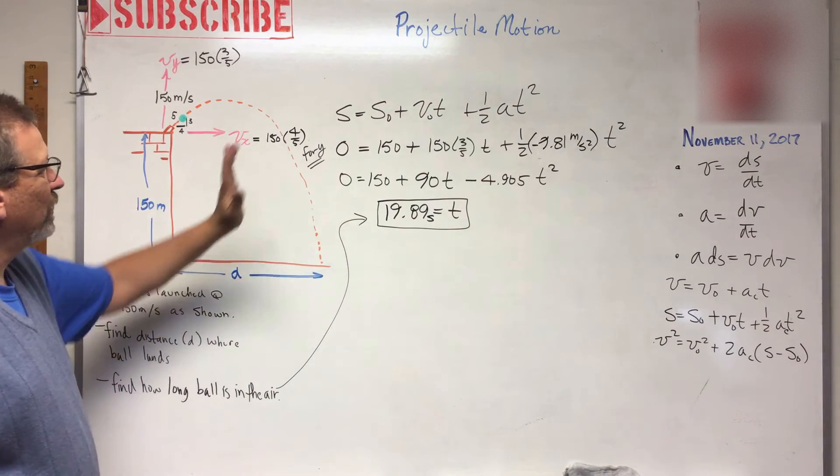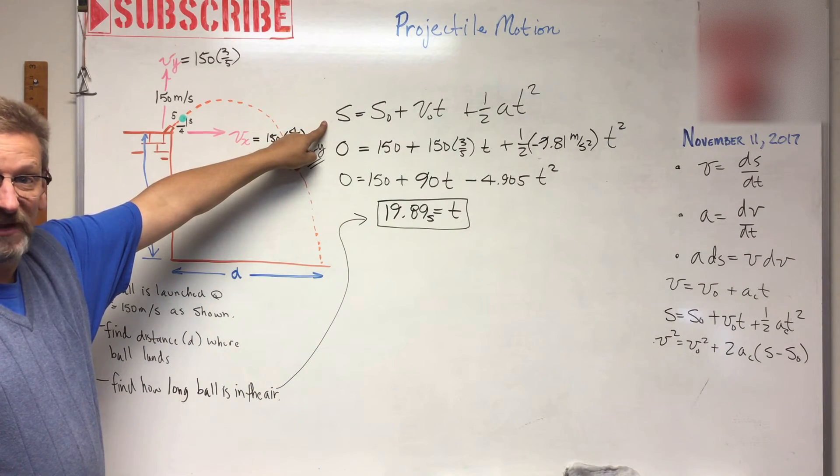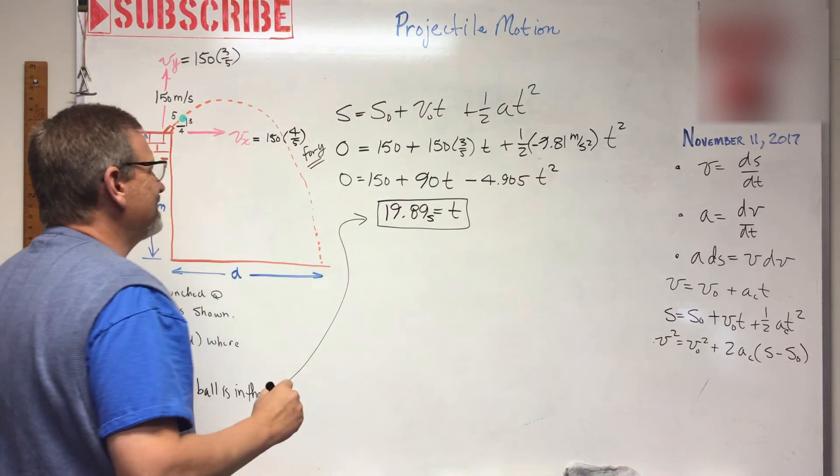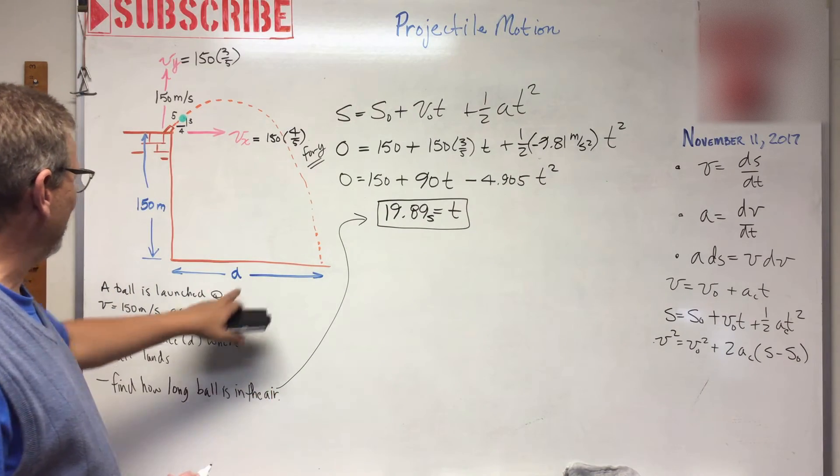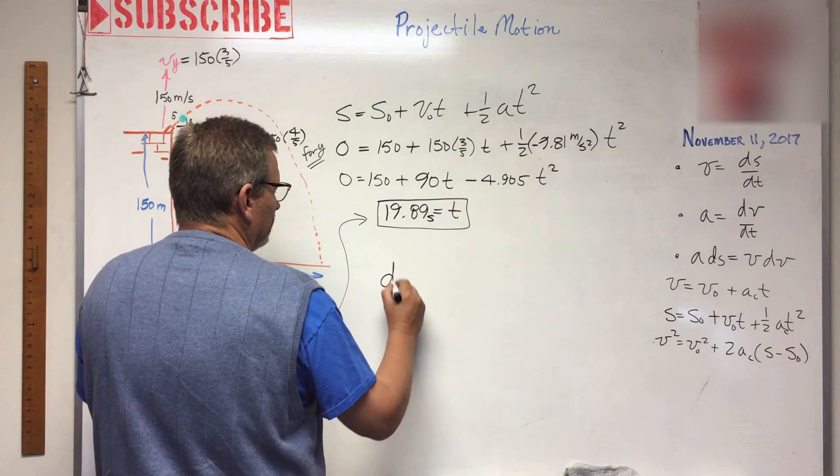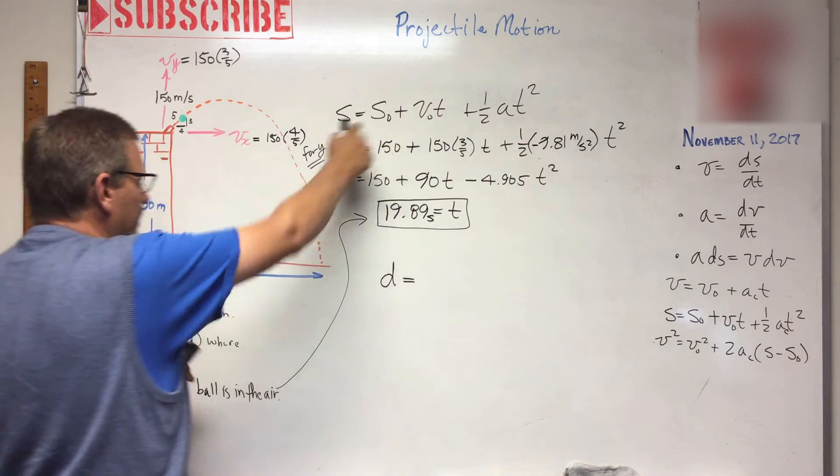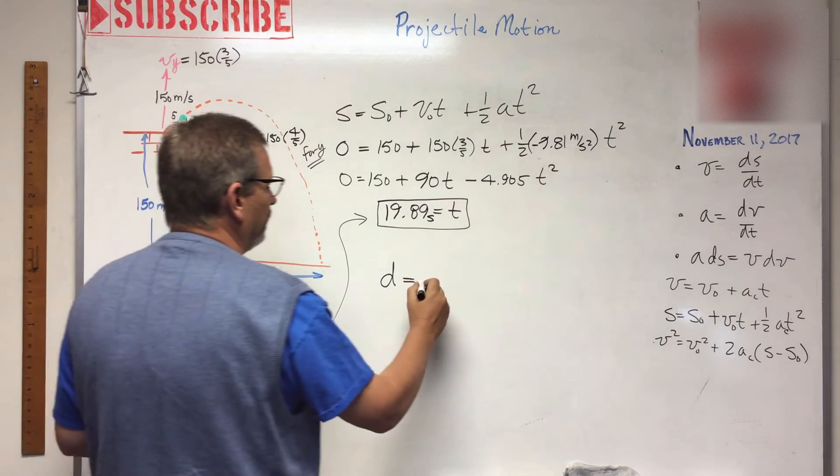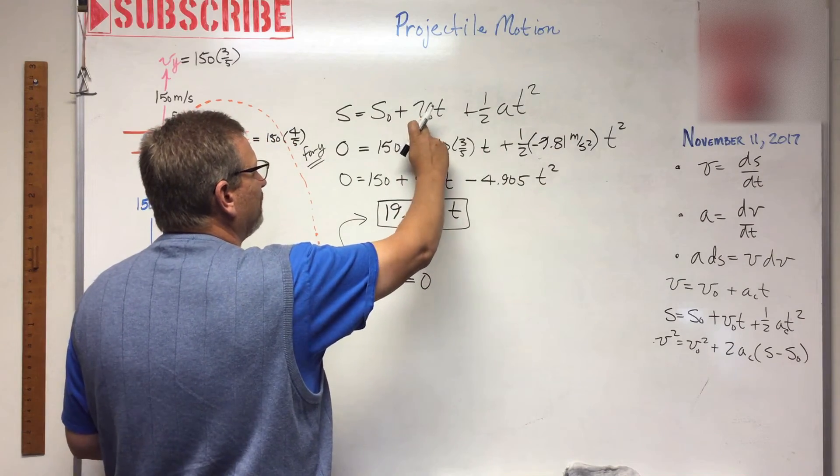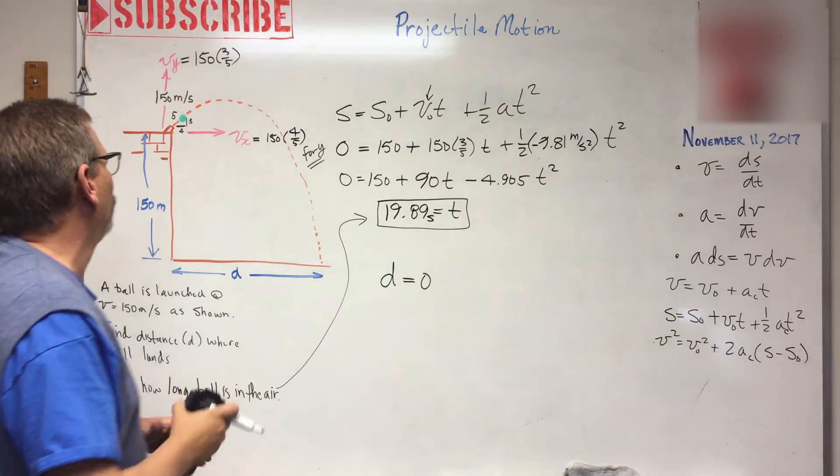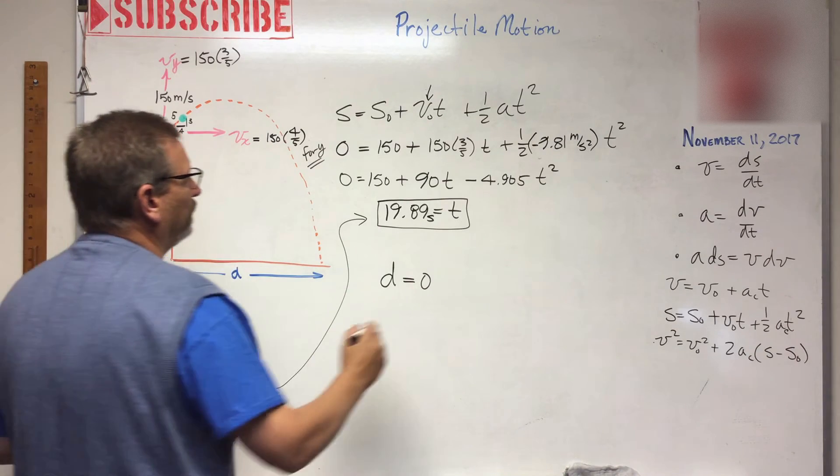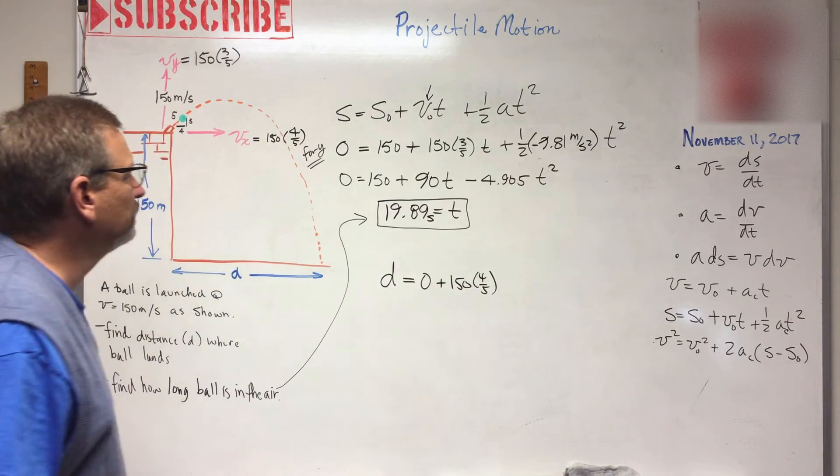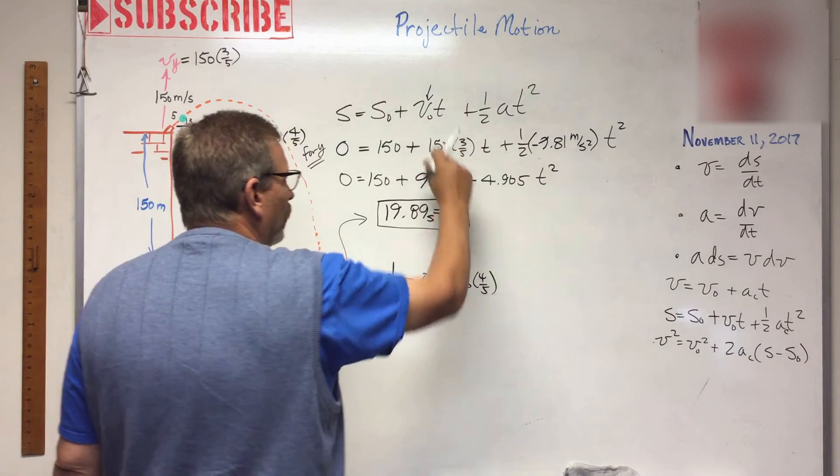Well, how far does it travel? How far is it from here to where it lands? Well, you know what? That is in the x direction. So can we take the same equation and work it for the x direction? I don't know, maybe. Let's see. So s, s is the final position. You know what? That's what we're looking for, isn't it? We'll call it d. D is equal to the initial position. Well, if that's final position, this is initial, then that's it. We'll call it zero, right?